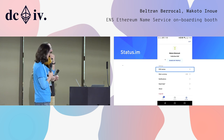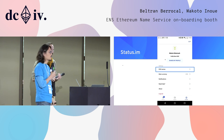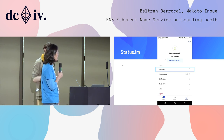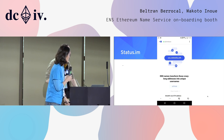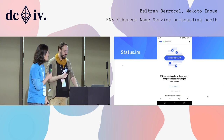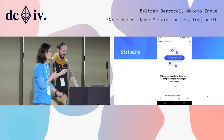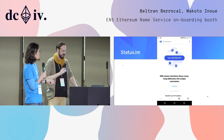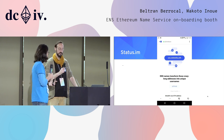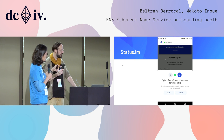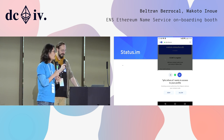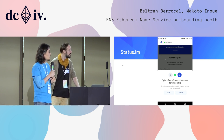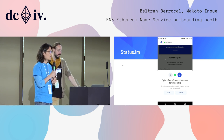The third case: Status. They integrated fairly recently — last week or so. If you create an account, there's a section called ENS name. They have 'stateofus' — I think 'status' was too short or got squatted. You can search whether a name is available. You have to stake 10 SNT for one year.